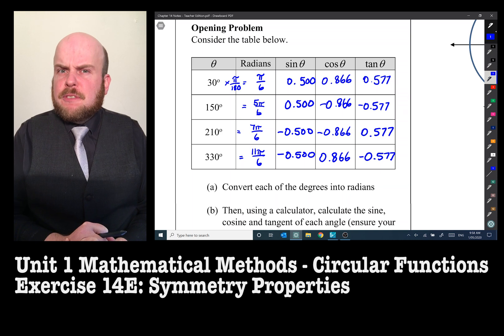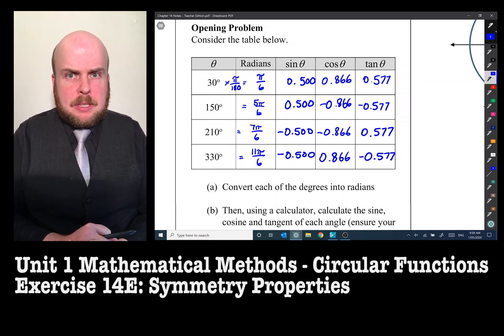And for tan I get various versions of 0.577, either positive 0.577 or -0.577. So far these four seemingly random degrees or radians have resulted in very similar answers, either the positive or negative versions of which there's possibly a pattern.